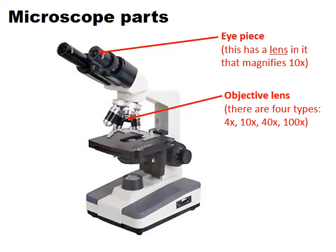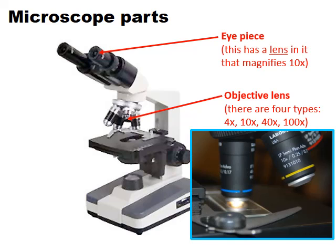Sometimes we start with the four times objective lens; we may use a ten times objective lens, sometimes the 40 times, and very occasionally the 100 times objective lens. This light microscope has two lenses — one in the eyepiece that magnifies ten times, and the objective lens with its specific magnification. So if we use the four times objective, the overall magnification will be ten times four, which is forty times.